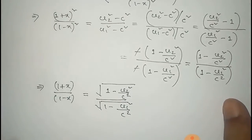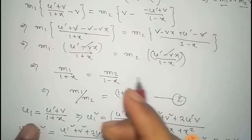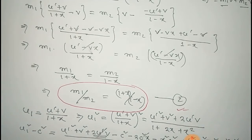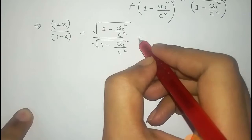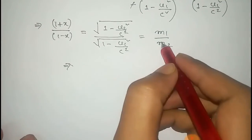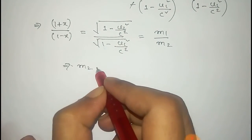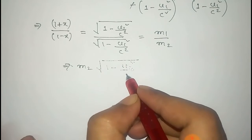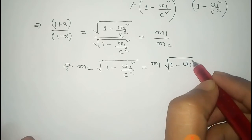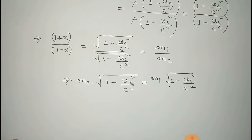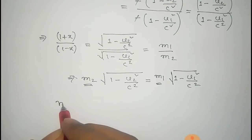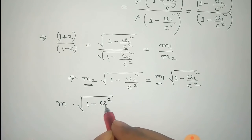From equation 2, we already have (1 plus x)/(1 minus x) equals m1/m2. Substituting this value, and cross-multiplying, we get m2 times the square root of (1 minus u2²/c²) equals m1 times the square root of (1 minus u1²/c²). The product of mass and the square root of (1 minus velocity²/c²) is therefore a constant.